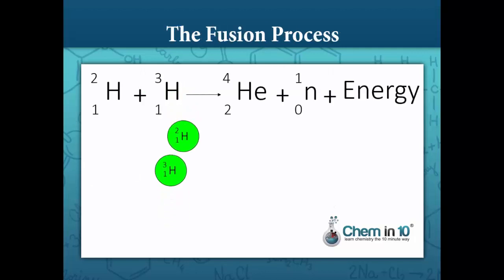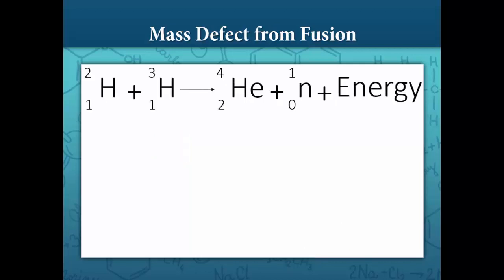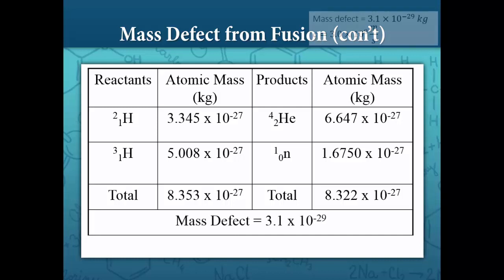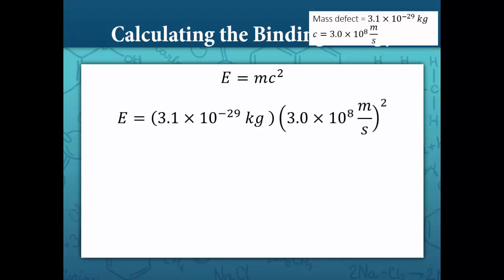We can visualize this process here. So let's figure out just how much energy is created. The mass of the reactants — the hydrogen-2 atom and the hydrogen-3 atom — totals 8.353 times 10 to the negative 27 kilograms, and the mass of the products totals 8.322 times 10 to the negative 27 kilograms. That leaves us with a mass defect of 3.1 times 10 to the negative 29 kilograms. We plug that into the equation E equals mc squared, where M is the mass defect and C is the speed of light, 3.0 times 10 to the eighth meters per second squared. Solving for energy, we get a total energy produced of 2.8 times 10 to the negative 12 joules.